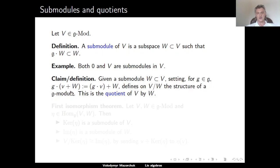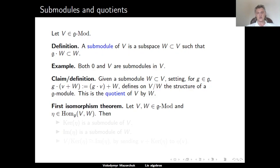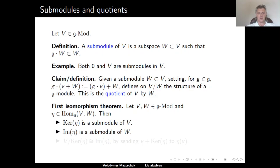There is something to check: one needs to verify that this is well-defined, but this is a standard computation based on the fact that w is stable under the action of g. We also have the first isomorphism theorem for Lie algebra modules: given two g-modules v and w and a g-module homomorphism η from v to w, the kernel of η is a submodule of v, and the quotient of v by the kernel of η is isomorphic to the image of η by sending the coset v + ker(η) to η(v).